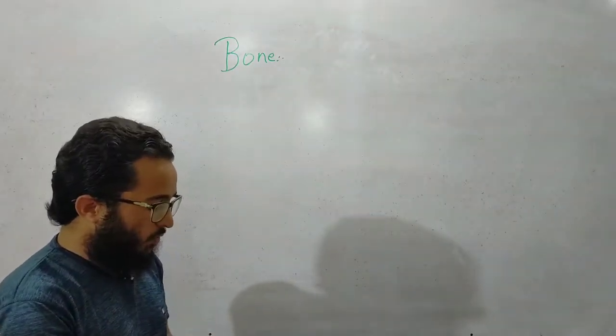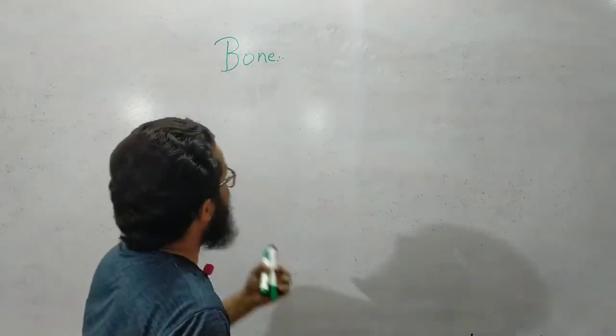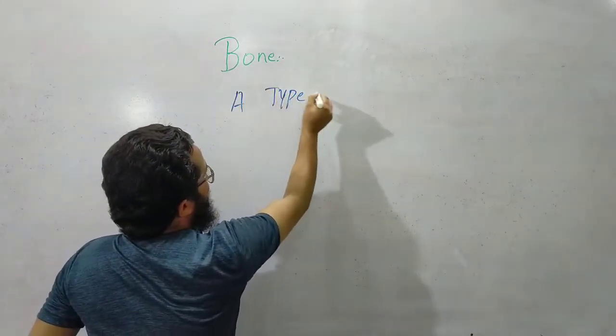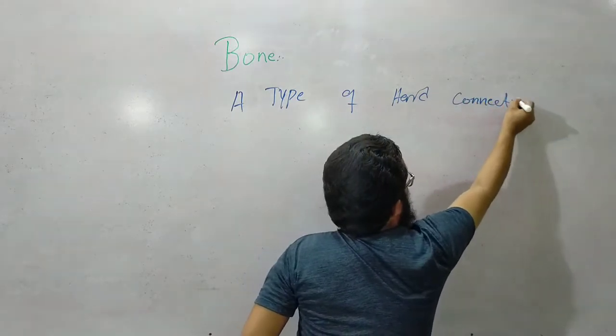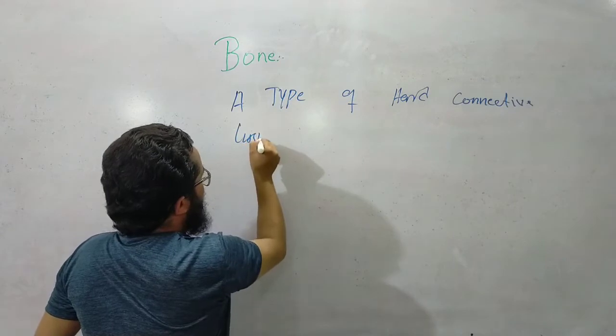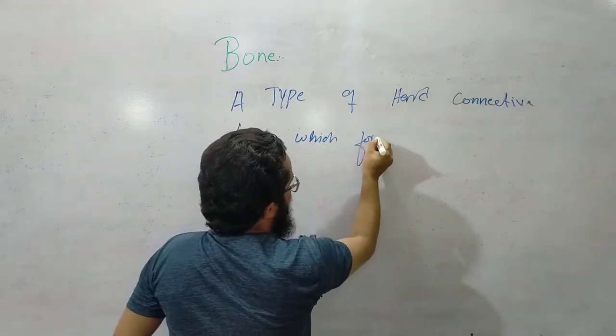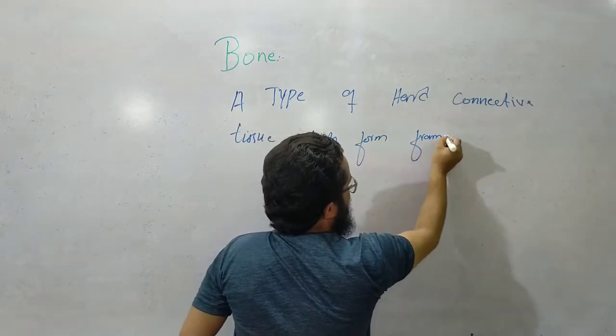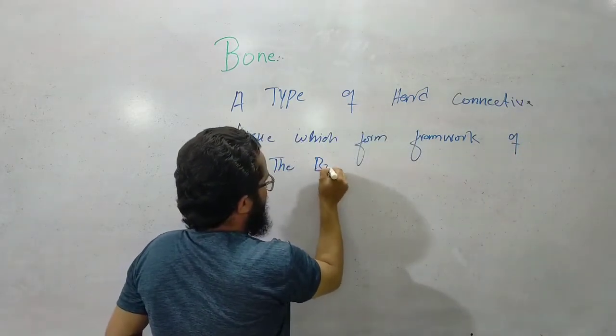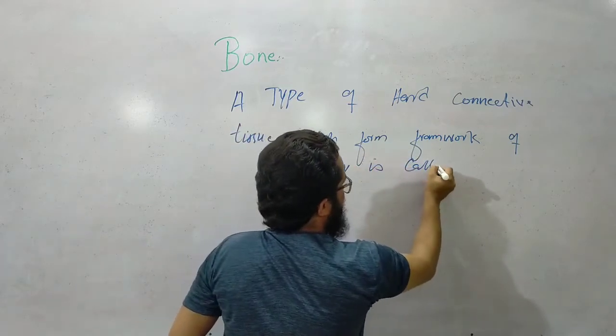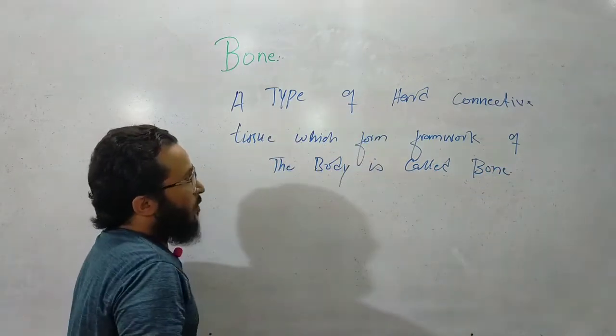Bone is a connective tissue, a type of hard connective tissue which forms the framework of the body. It's called bone.